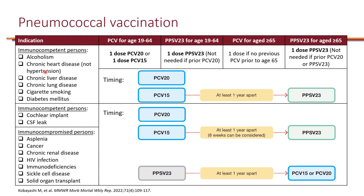Now let's look at those with risk factors. These are broken into three categories: the first is immunocompetent individuals with comorbidities; the second is immunocompetent individuals with conditions that could allow Streptococcus pneumoniae to enter the brain and cause meningitis — a relatively higher risk group; and the third is individuals with immunocompromising conditions such as asplenia, cancer, HIV, transplant, and others.